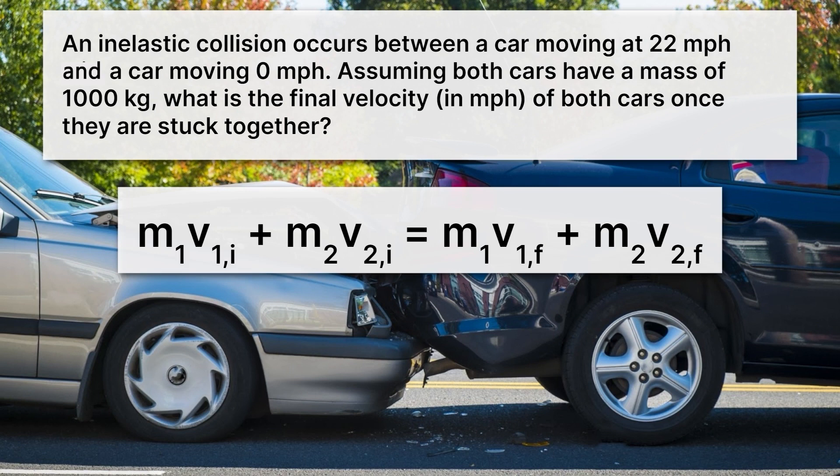We're going to start with our equation from our elastic collision video. Here we see all of the same old variables. Mass 1 times velocity 1 initial plus mass 2 times velocity 2 initial is equal to mass 1 times velocity 1 final plus mass 2 times velocity 2 final. That's basically just saying the total momentum before and after the collision is the same.